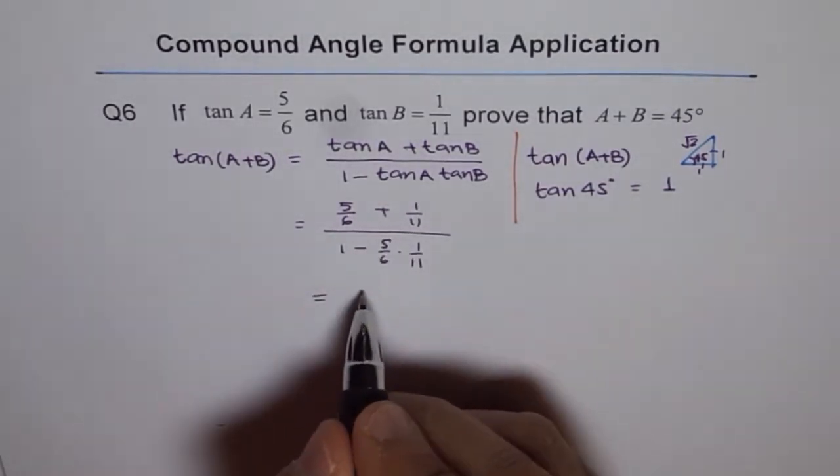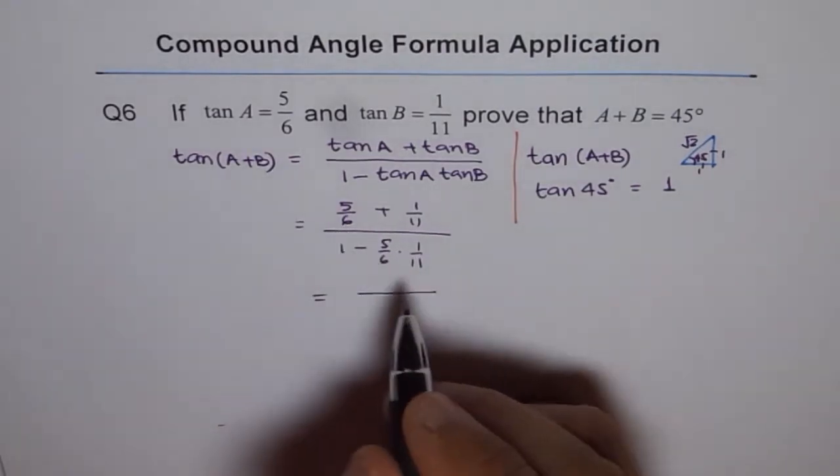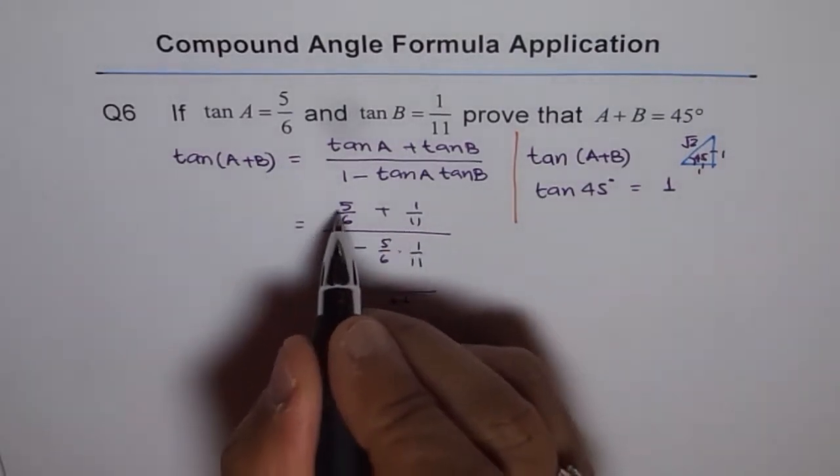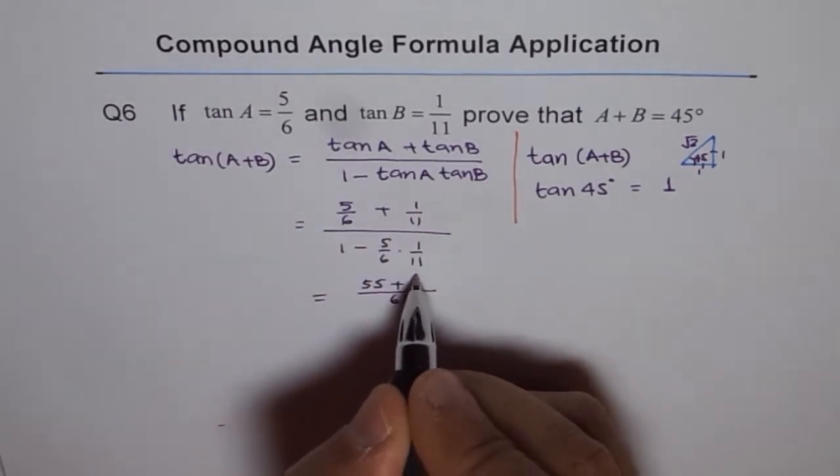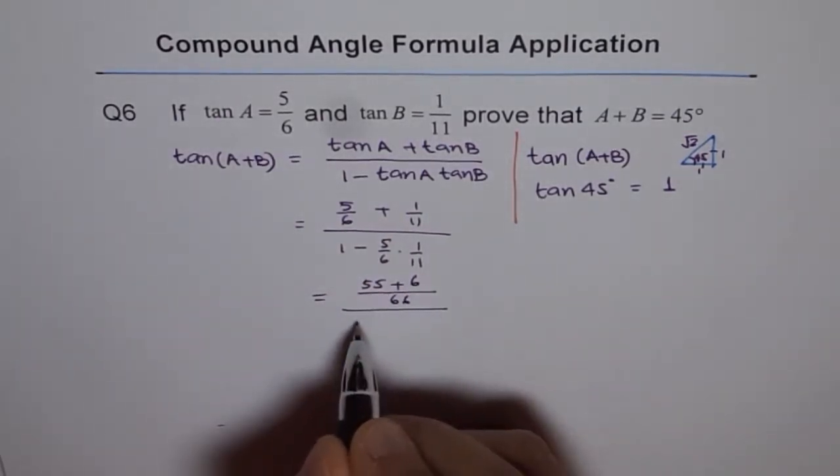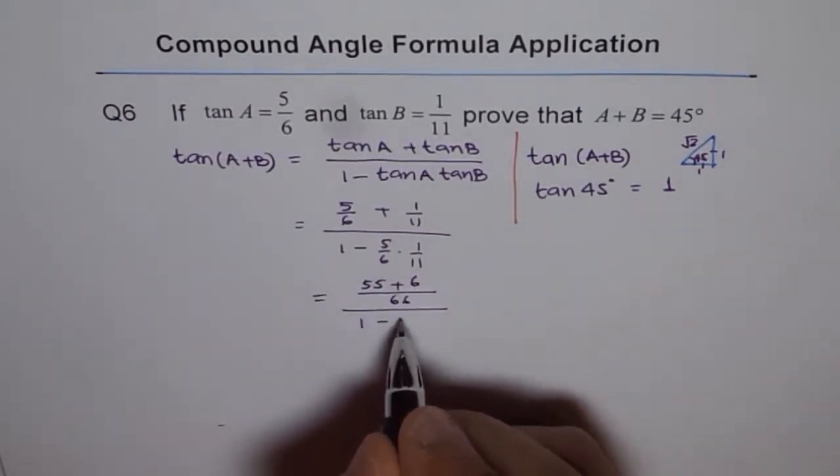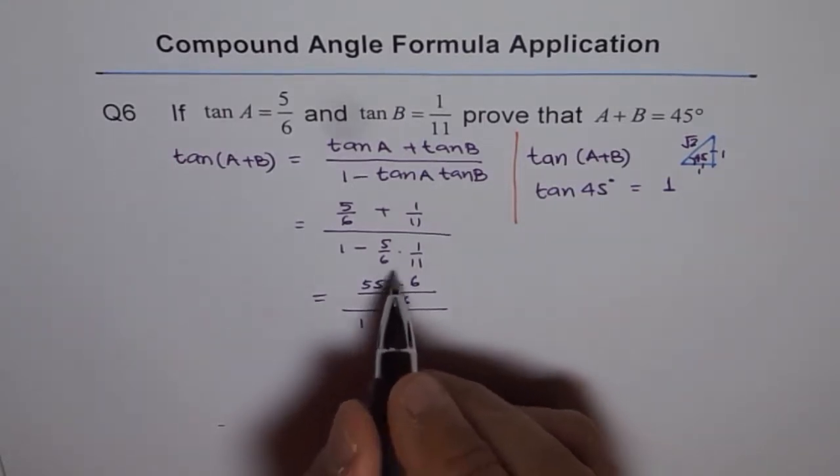We can take common denominator of 66 here, 11 and 6. And we get 11 times 5, 55 plus 6 times 1, 6. So we can take common denominator of 66 divided by 1 minus 5 over 66.